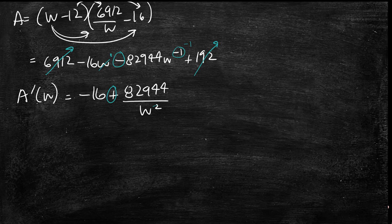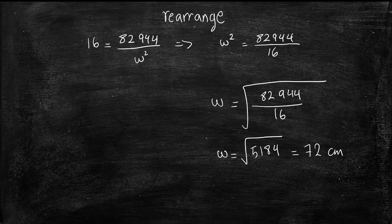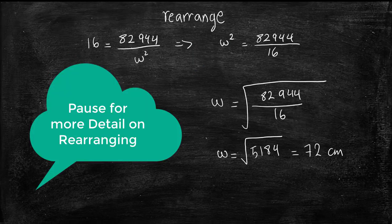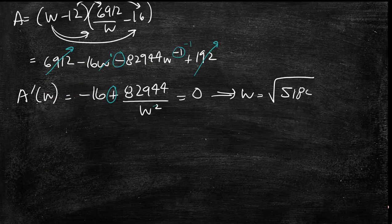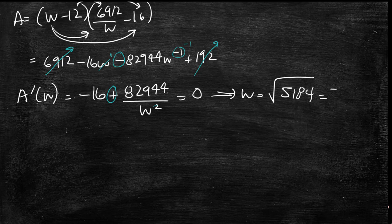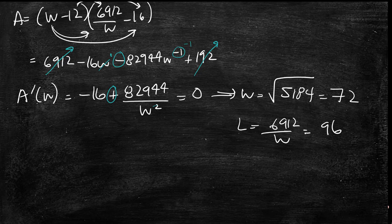So if you set this to 0, basically if you rearrange this, you're going to be left with W is equal to the root of 5184, which is equal to 72. And we already know from previously that L is equal to 6912 over W. So that means that L is equal to 96. So now we have the dimensions of W and L.